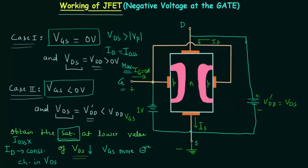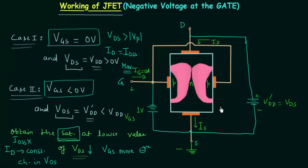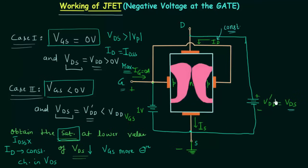Now I will quickly draw the pinch-off condition. You can see that the two depletion regions appear to touch each other, and when this happens the current ID becomes constant. If you increase VDS further, ID remains the same — this is the saturation condition. By applying a negative bias to the gate, the saturation level can be reached at a lower value of VDS.